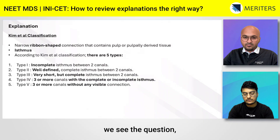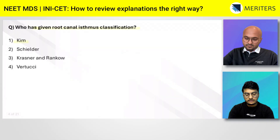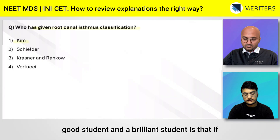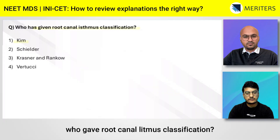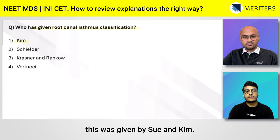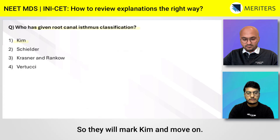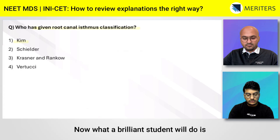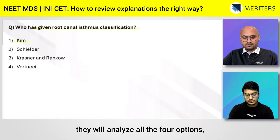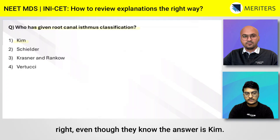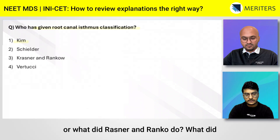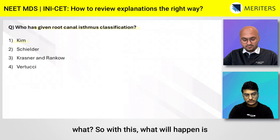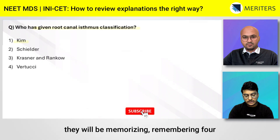Before moving on to the classification itself, let's discuss the biggest difference between a good student and a brilliant student. A good student reading 'who gave the root canal isthmus classification?' will think 'it was Kim,' mark the answer, and move on. A brilliant student will analyze all four options — even knowing the answer is Kim — and try to remember what Schilder did, what Krasner and Ranka did, and so on.